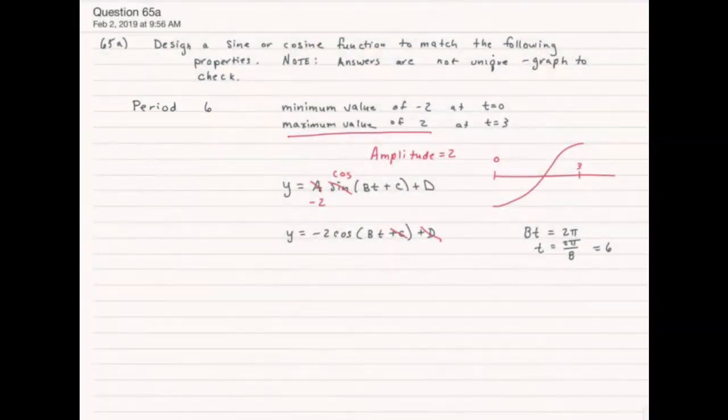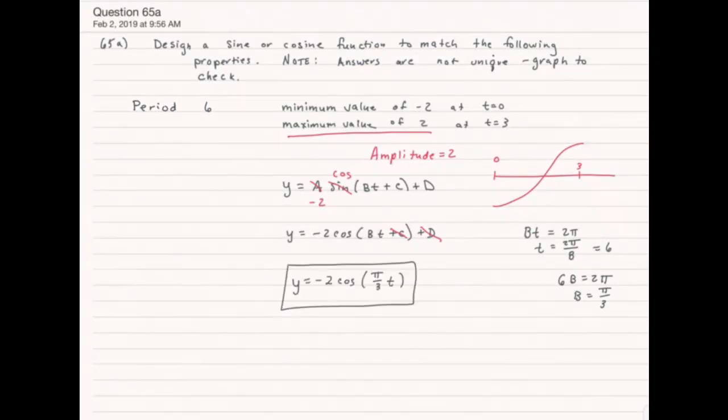So I just need to solve for b to make that true. And I get that b is pi over 3. And that is my final answer. Again you could have used a sine and then you would have had a phase shift, but I think this answer is the most straightforward.